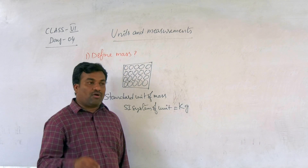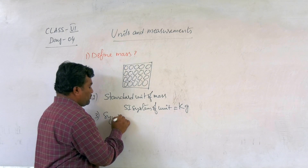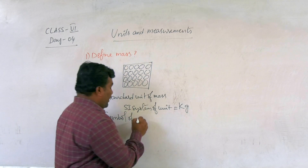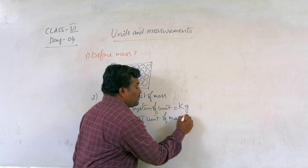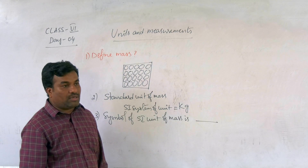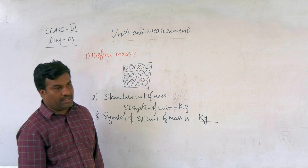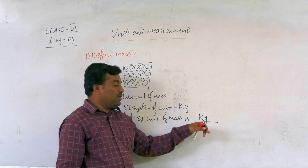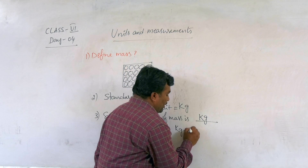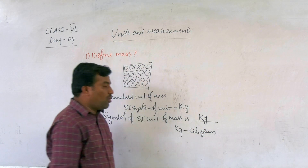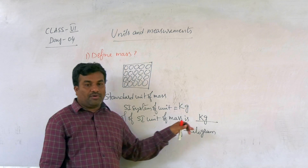Next, let us discuss the symbol of the SI unit of mass. The SI system unit is Kg, so the symbol is Kg — K is the capital letter and G is the small letter. Always remember: K is capital, g is small. Kg means kilogram. The symbol of the SI unit of mass is Kg.